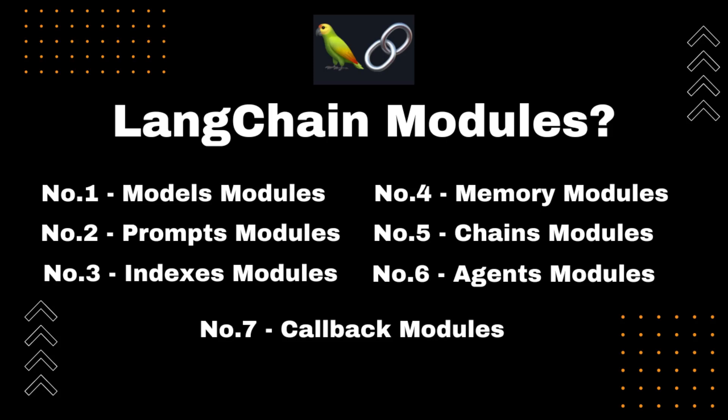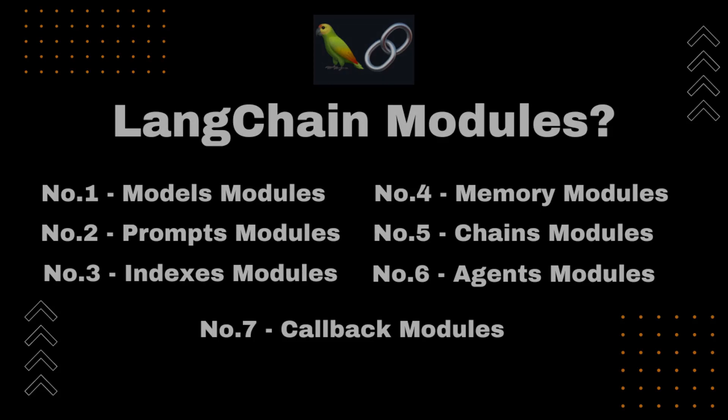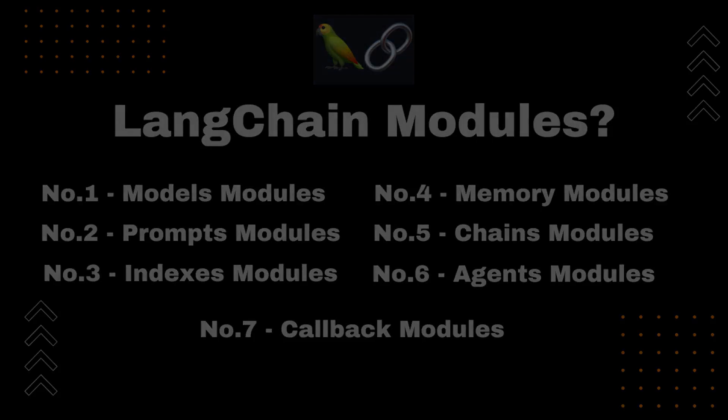Number 7: Callbacks Module. Callbacks let you log and stream the intermediate steps of any chain, making it easy to observe, debug, and evaluate the internals of an application.